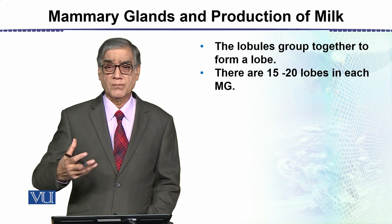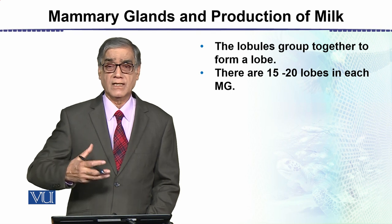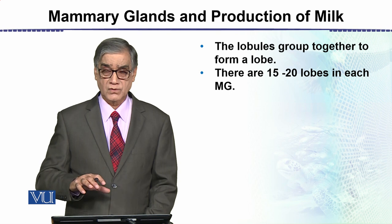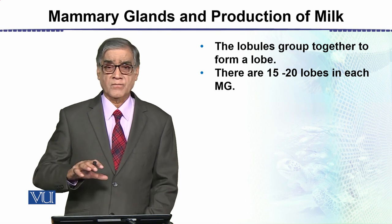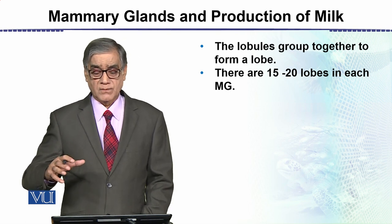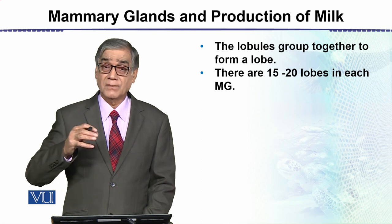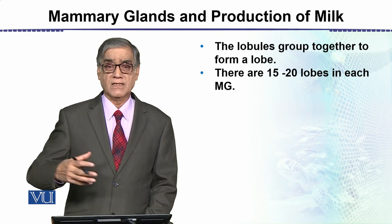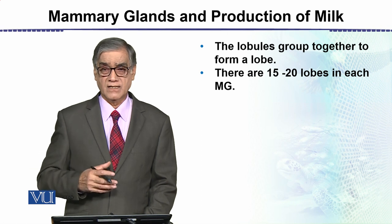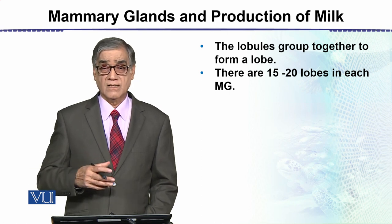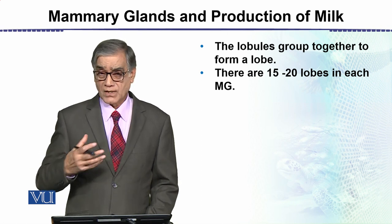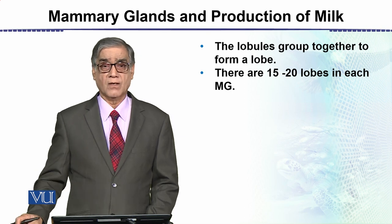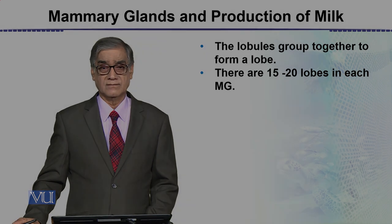The production of milk is under hormonal control. Milk production takes place after the birth of the child. Hormonally, there is the regulation of milk production and then milk ejection. This concludes the topic of mammary glands.